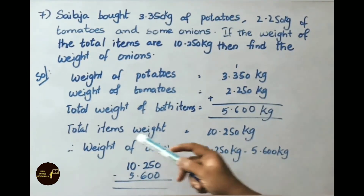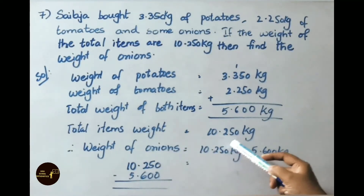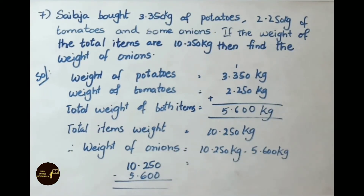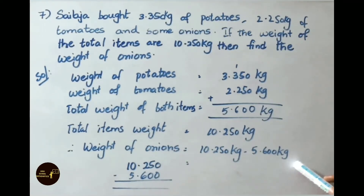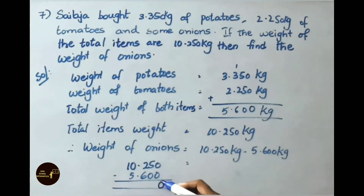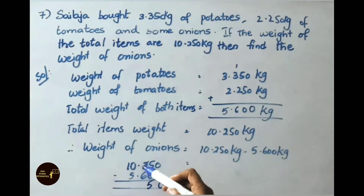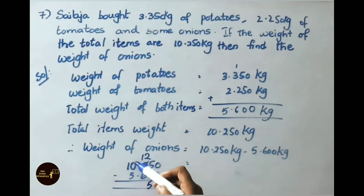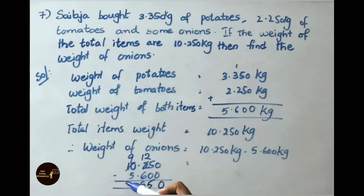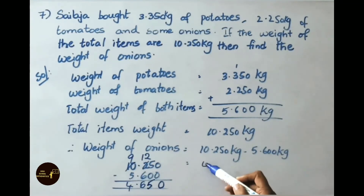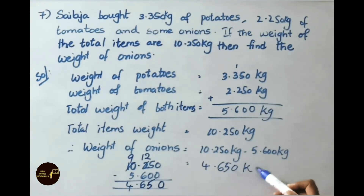The total weight of all three items is 10 kg 250 grams. So weight of onions equals 10.250 kg minus 5.600 kg. Doing the subtraction with borrowing: 12 minus 6 is 6, 9 minus 5 is 4. So the answer is 4.650 kg, that is 4 kg 650 grams.